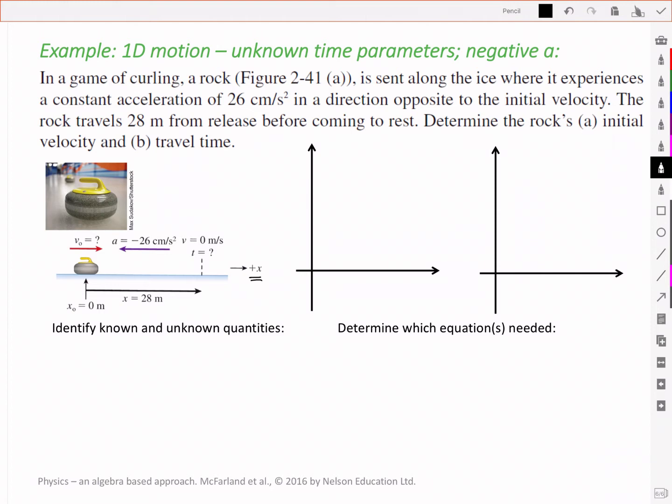It tells us that it's got an acceleration that's opposite direction of the velocity. So it's a negative 26 cm per second squared. It's negative because we've defined positive in this direction, and it's going in the opposite direction. So it's going in the negative direction. And that means it's going to slow down, and slow down until it comes to a final velocity of zero meters per second. In other words, it stops.